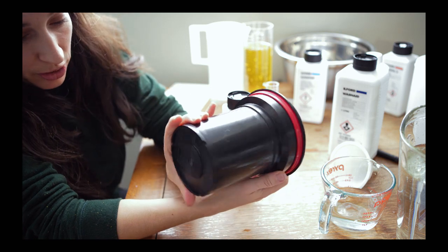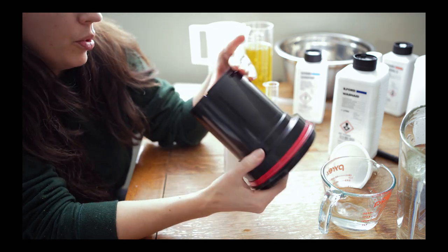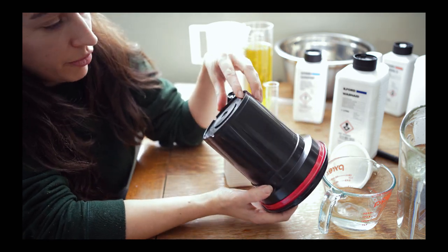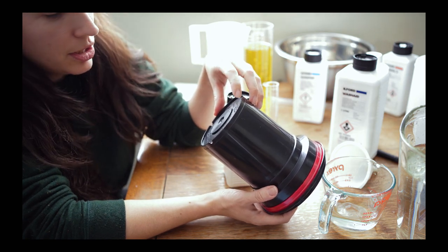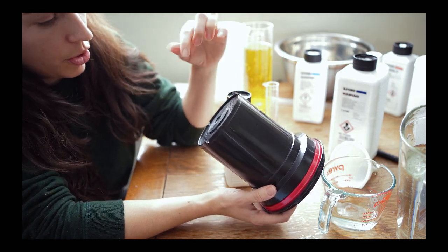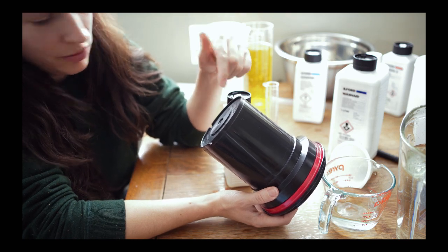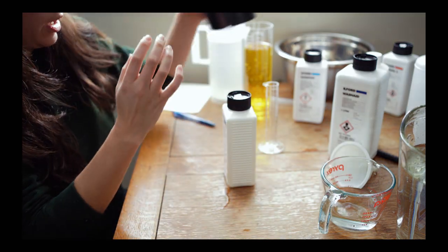Something I also didn't look at is at the bottom of the Patterson tank. It says that one roll of 35 millimeter film requires 290 milliliters of solution. So I'm going to only need to pour in 290 milliliters of each of these items. We'll try to do that. I have another graduated cylinder.